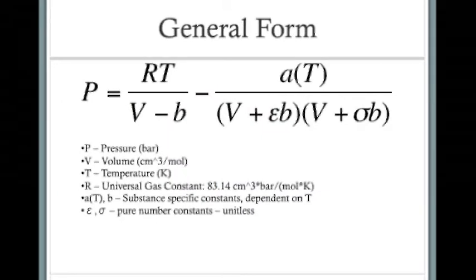Here is a general form of a cubic equation of state. P is the pressure, V is the volume, T is the temperature in Kelvin, and R is the universal gas constant.